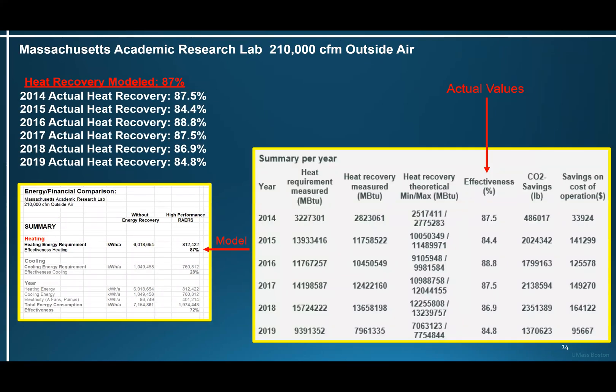Another system — an academic research lab in Massachusetts with 210,000 CFM of outside air. The model calculated 87% annual heating effectiveness. Actual post-occupancy results: 2014 — 87.5%, 2015 — 84.5%, 2016 — 88.8%, 2017 — 87.5%, 2018 — 86.9%, and 2019 — 84.8%. Again, pretty close to the model.